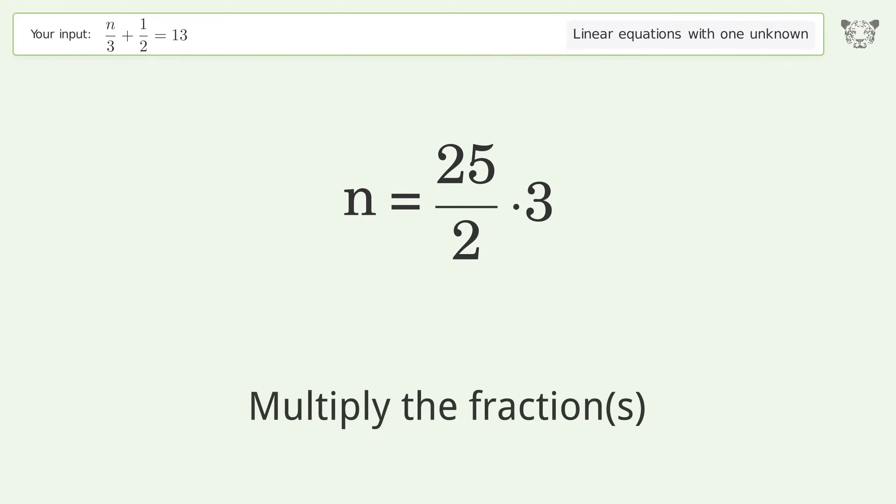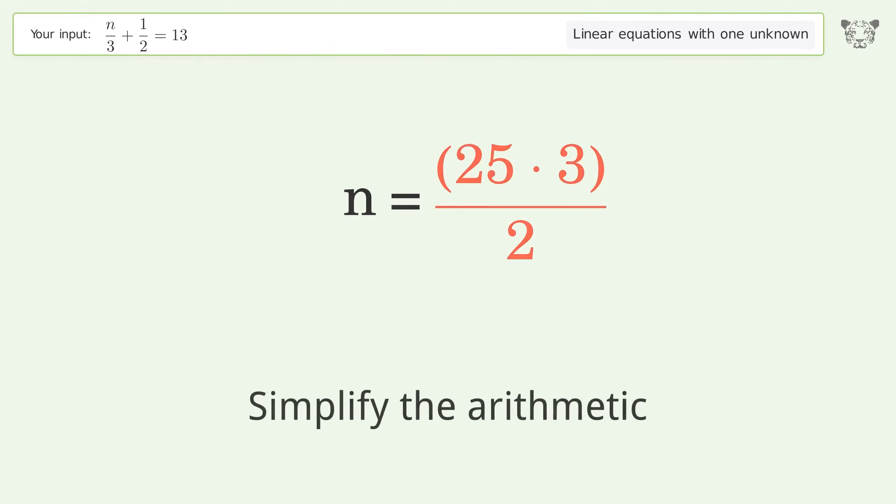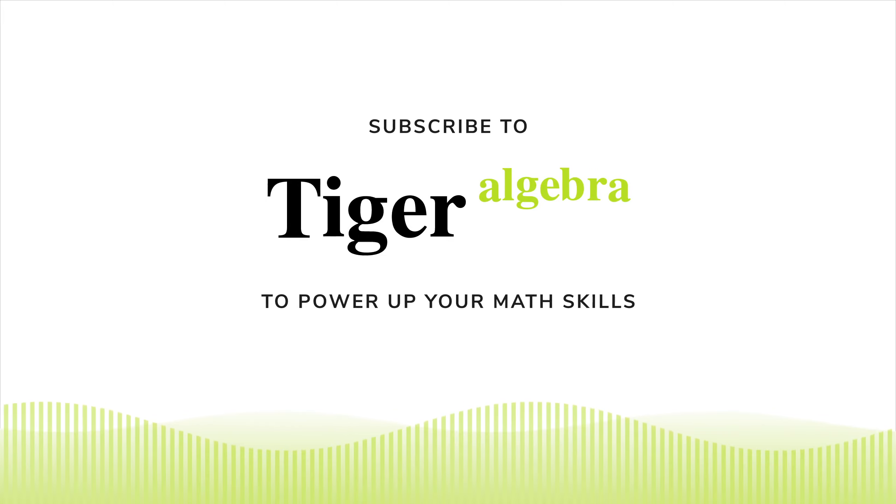Multiply the fractions. Simplify the arithmetic. And so the final result is n equals 75 over 2.